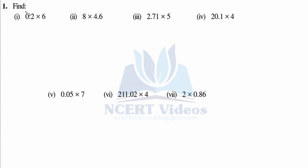First find 0.2 × 6, 8 × 4.6, 2.71 × 5, 20.1 × 4, 0.05 × 7, 211.02 × 4, and 2 × 0.86. So you have to find the products.